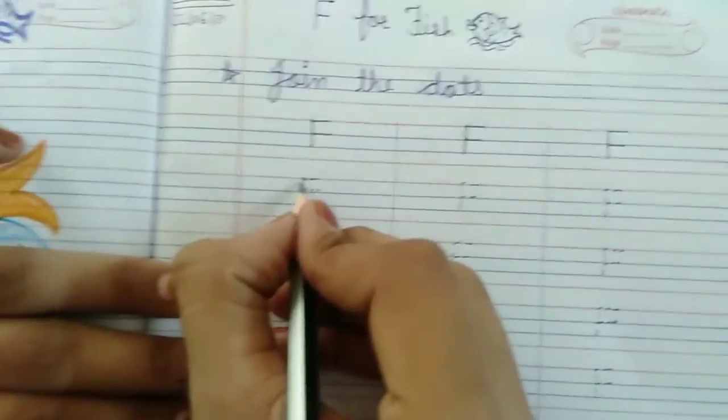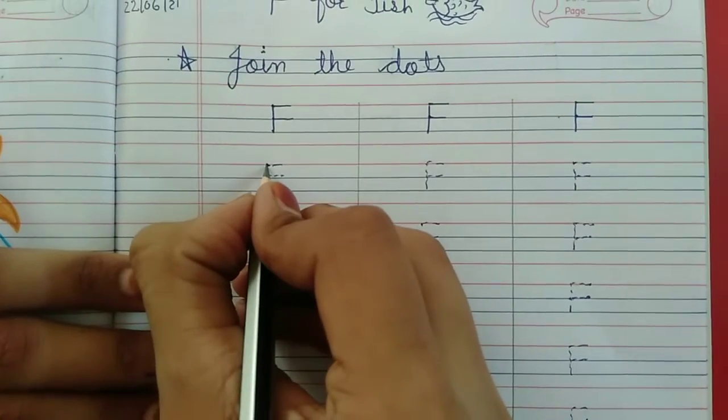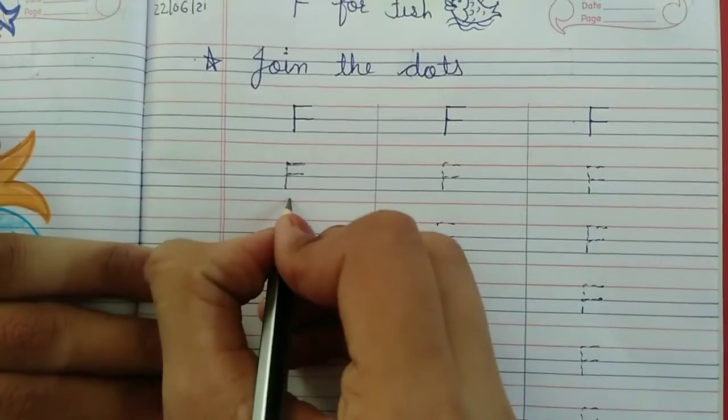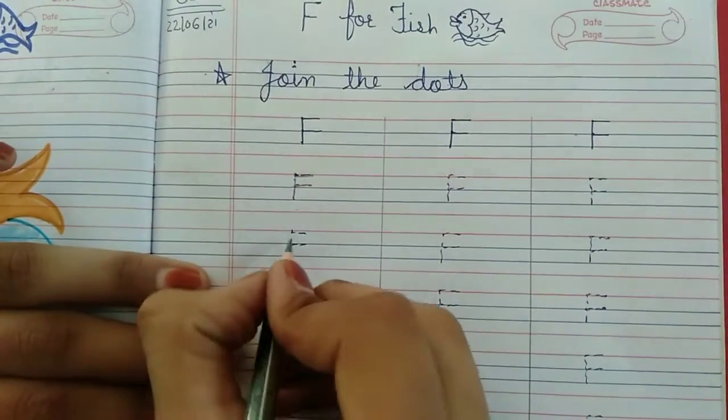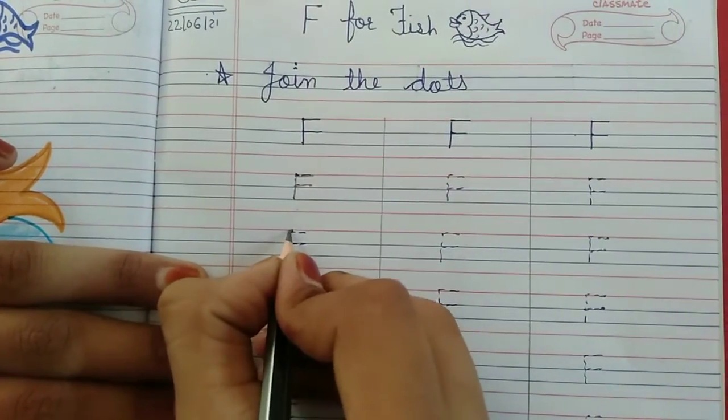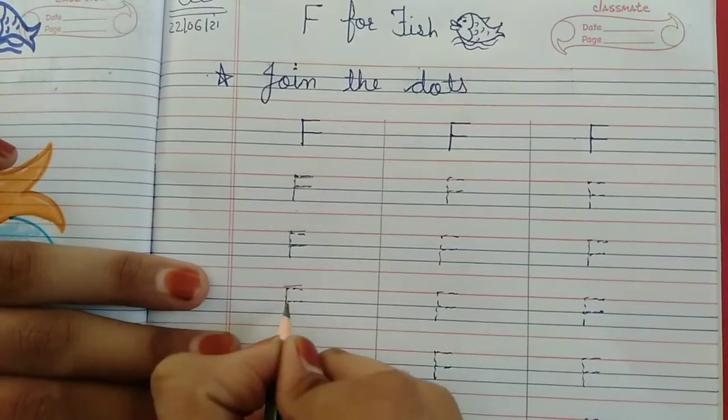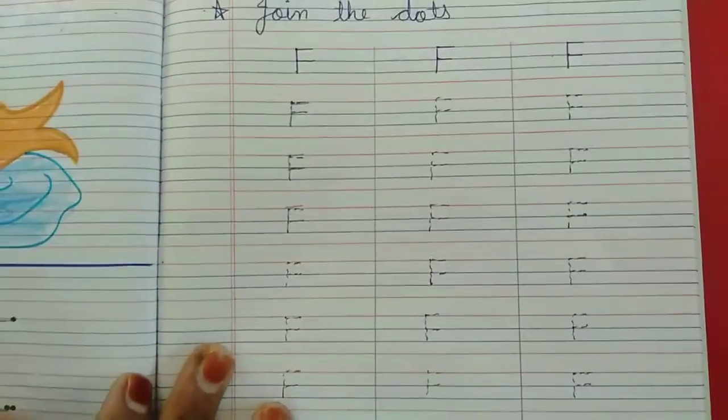Red line se lekar second blue line. Standing line. Red line pe first sleeping line. And first blue pe second sleeping line. F for fish. Speak and write. F for fish. F for fish. Bol bol ke likhna hai students aapko.